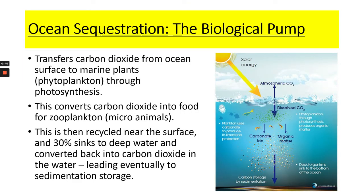There are three different pumps in ocean sequestration. Ocean sequestration simply means the transfer and storage of carbon — the movement and storage of it. The first is the biological pump, which transfers carbon from the ocean's surface — the top layer — into marine plants like phytoplankton through photosynthesis. Solar energy hits the Earth's surface, and light penetrating the ocean surface transfers energy into phytoplankton, which are oceanic plants. This converts carbon dioxide into food within those phytoplankton.